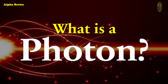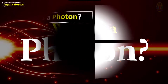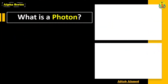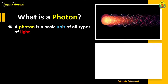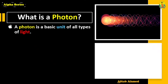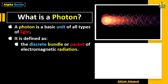Welcome to Alpha Science Academy. Today we are going to discuss a very important question: what is a photon? A photon is a basic unit of all types of light — light from LEDs, compact fluorescent lamps, halogen lamps, or incandescent bulbs.